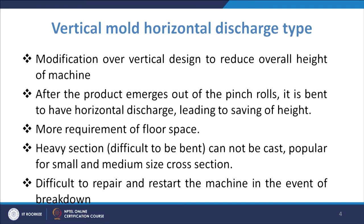Whenever there is a need to reduce overall height or handling is an issue, we go for a modification of the vertical type. In this case, when the product emerges out of the pinch rolls, it is bent to have horizontal discharge, leading to a saving of height. So after the vertical mold and the pinch rollers, a bend is applied so that the strand moves in the horizontal direction.